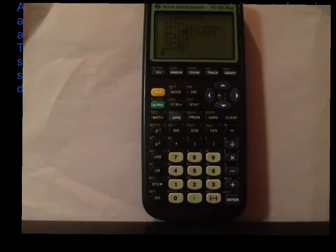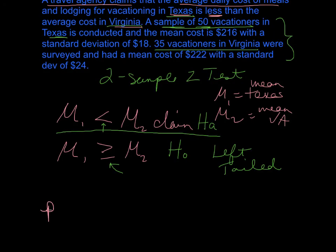Our p-value was 0.105. We were not given a level of significance here. Normally the problems will give you a level of significance. If they don't give it to you and you're doing your own hypothesis test, 0.05 is the standard level of significance. We're comparing 0.105 to 0.05.